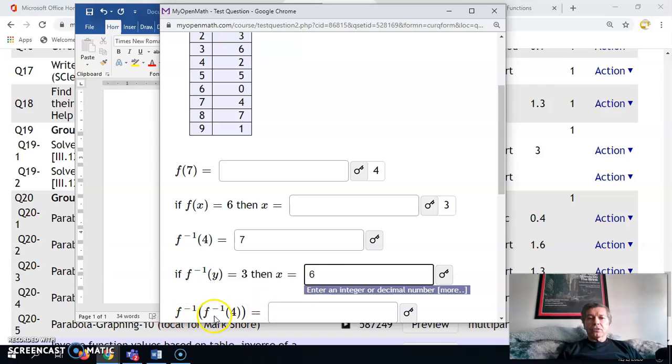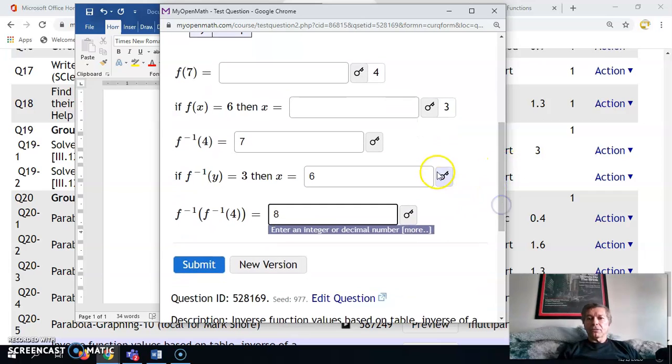Now, f inverse of f inverse of 4. First, do f inverse of 4. f inverse of 4 gets me to 7, and then f inverse of 7 gets me to 8. So this value right here would be 8. And you can check these right here: 6 and 8. And that's how you do these.